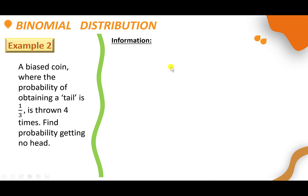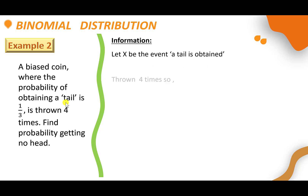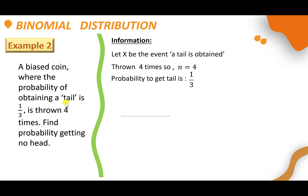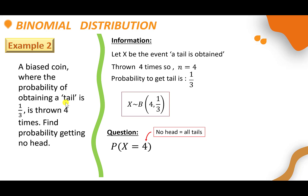Example 2: a biased coin where the probability of obtaining a tail is 1/3 is thrown 4 times. Find the probability of getting no heads. The question asks for no heads, which means we are getting all tails across 4 trials. So let X be the number of tails obtained, with n = 4 and p = 1/3, giving X ~ B(4, 1/3). No heads means all 4 are tails, so we find probability X = 4. Alternatively, if we define X as the number of heads, then p = 2/3 and we find probability X = 0.